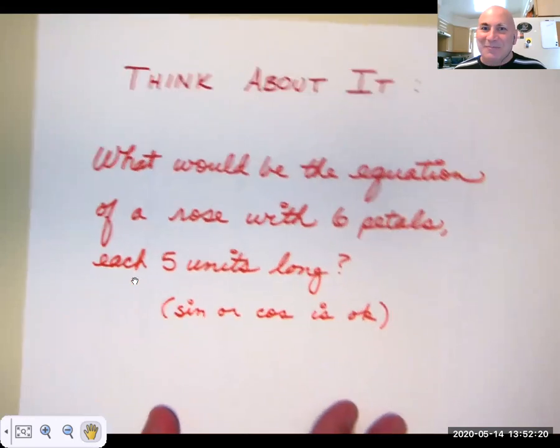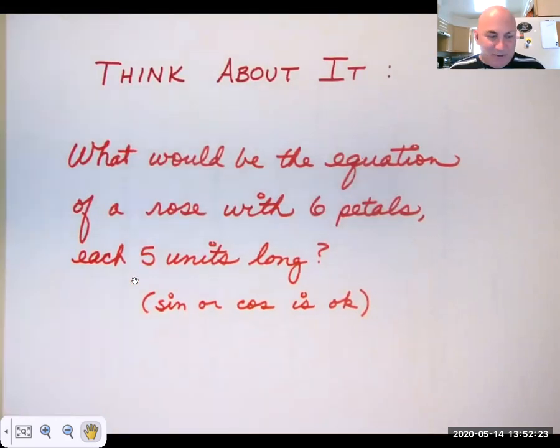So here's a fun problem I'd like you to think about. It doesn't matter to me if you use a sine or a cosine rose, either one. What would be the equation of a rose with six petals and each petal is five units long? So if you're thinking that's a trick question, it is. If you haven't gotten that far yet, think about it a bit and determine why it's a trick question. I'll leave you with that. Have a great day.